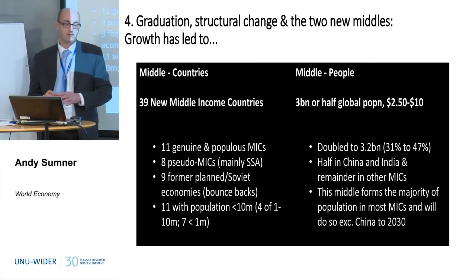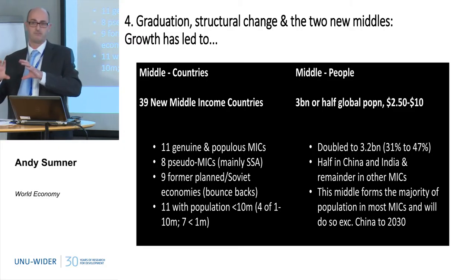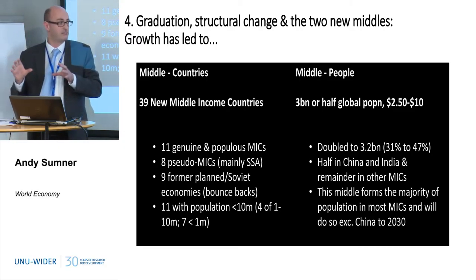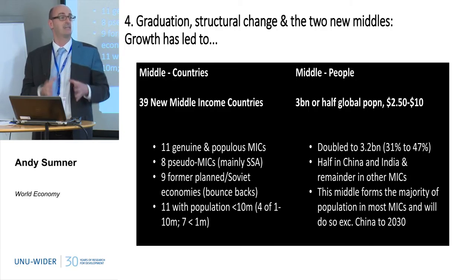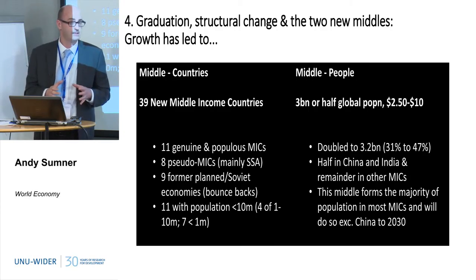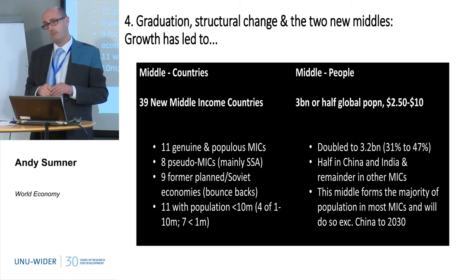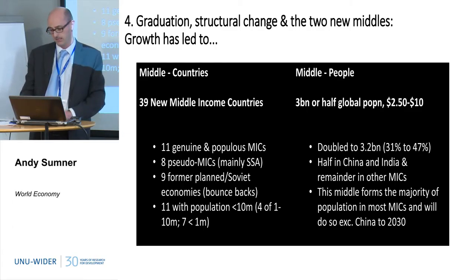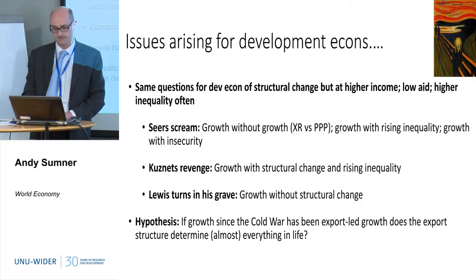In most middle-income countries, the majority of the population is now in the middle. That doesn't mean people are secure — it probably just means they're not poor on a day-to-day basis, but they're at risk of falling back into poverty. That's why things like social protection and measures to address insecurity will be increasingly important.